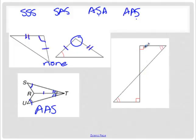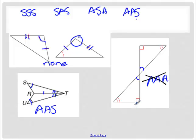Over here on the right, you have two right angles, two congruent angles, and vertical angles congruent. Based on what I know, that's angle, angle, angle. The only problem is angle, angle, angle is not a congruence statement — as we get into later chapters it'll be a similarity statement. So we're going with none again.